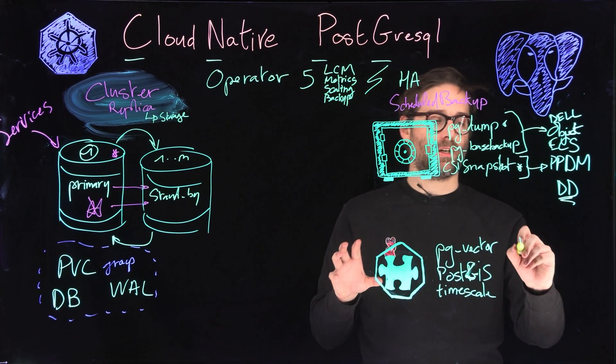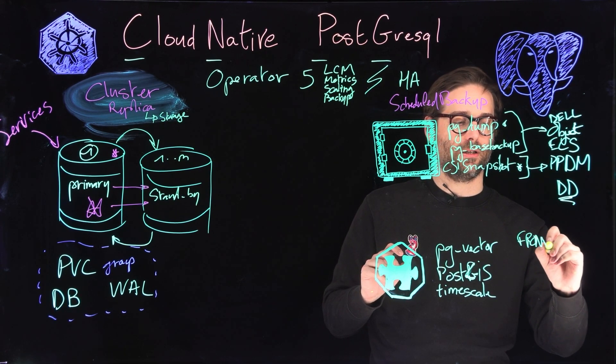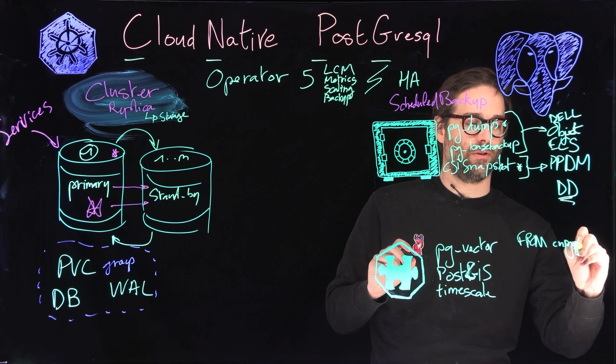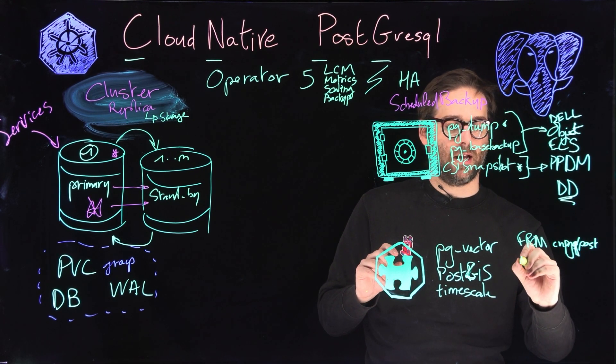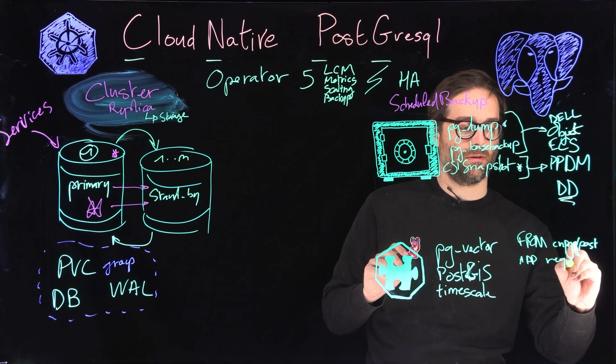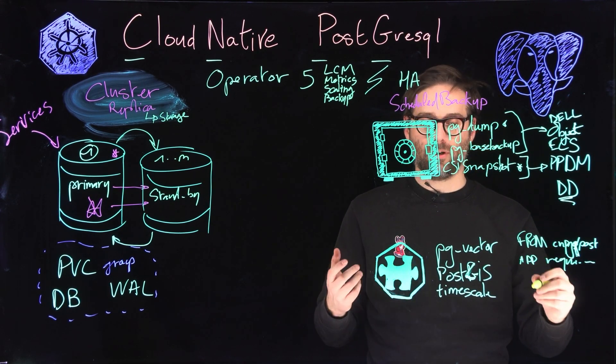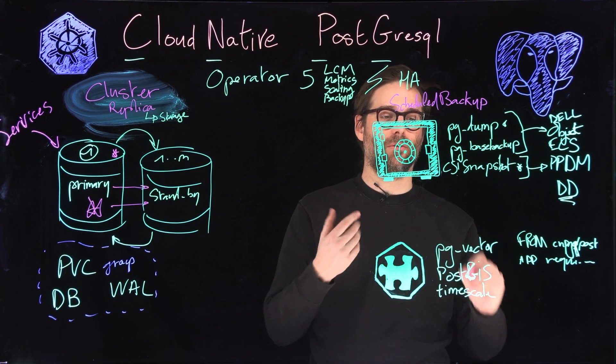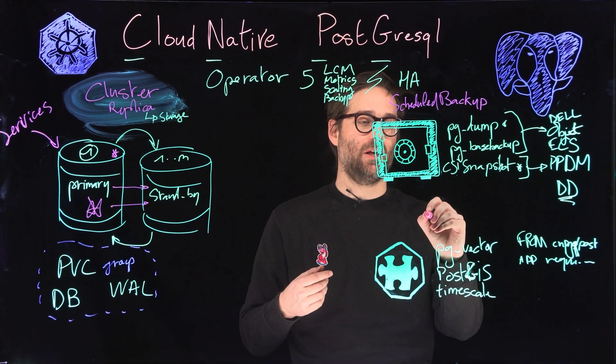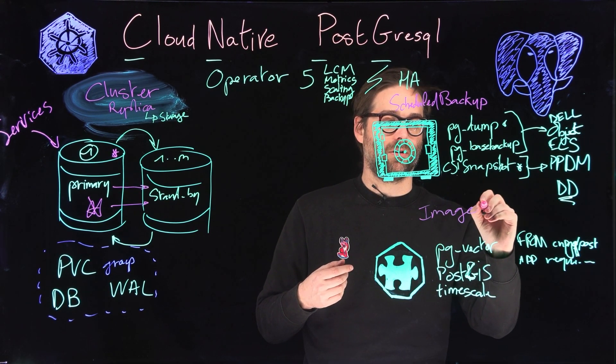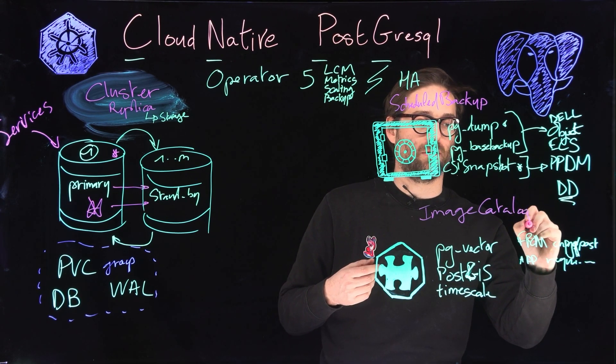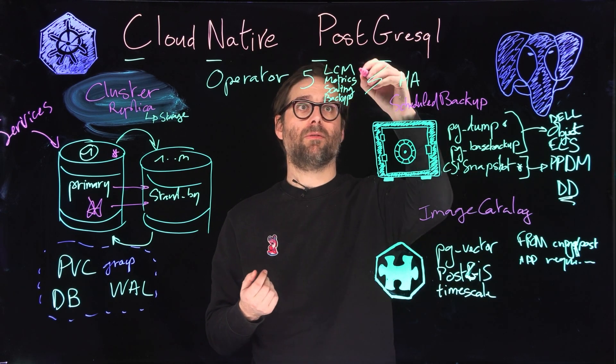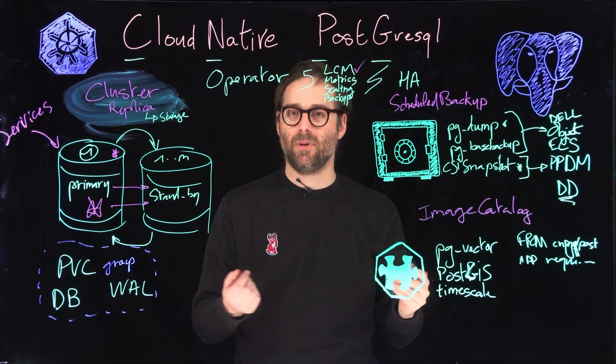The idea is you're going to start from the CNPG Postgre image, add your requirements, build your image and publish it to a container registry. Once you have this, CNPG offers another CR named Image Catalog, where you can refer to your enhanced PostgreSQL image and distribute it to your users. Thanks to lifecycle management, you can also deal with upgrades and maintenance periods.